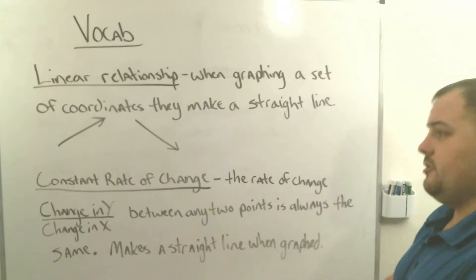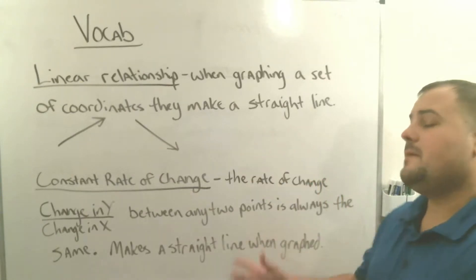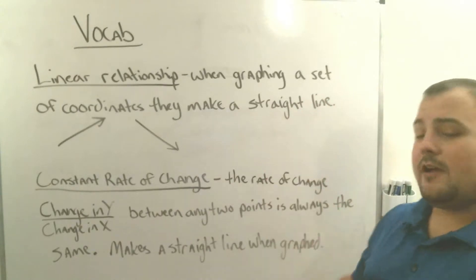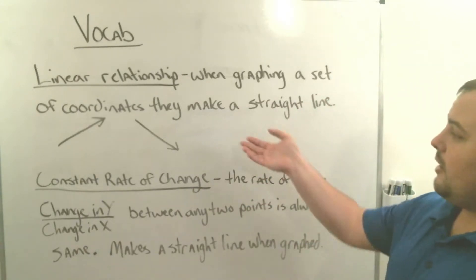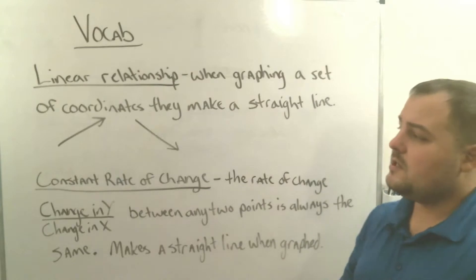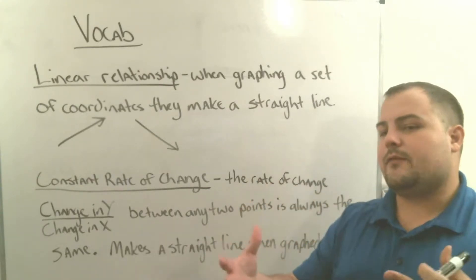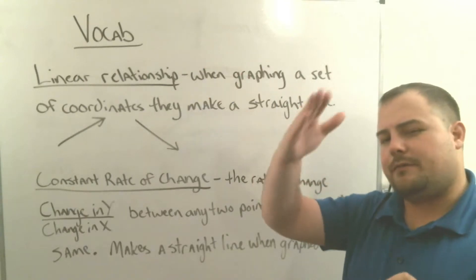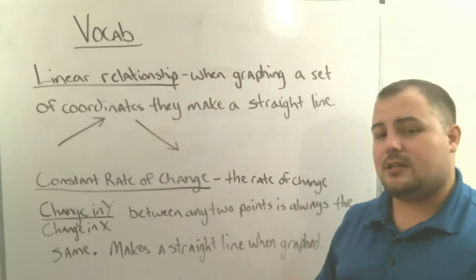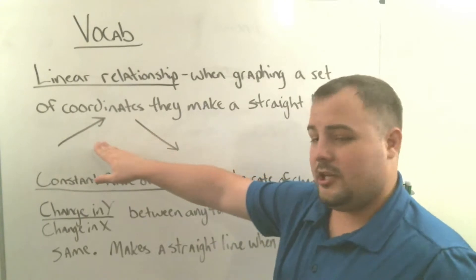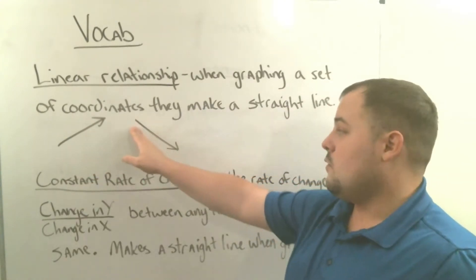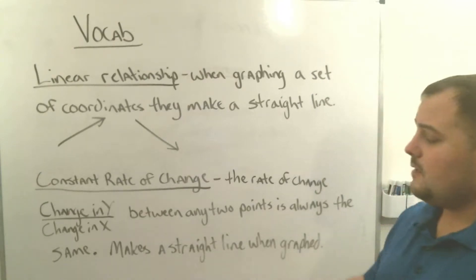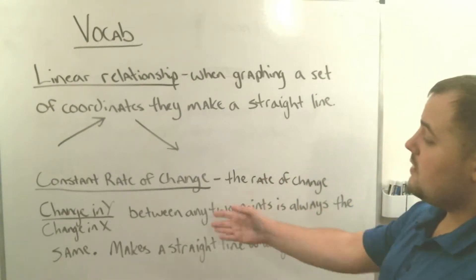For vocab today we have two words: linear relationship and constant rate of change. A linear relationship is when we graph a pair of coordinates and we actually make a straight line when we connect the dots. So if we take information given on a table, plot all the points, and they fall on a straight line, that's a linear relationship — something that makes a straight line going up (positive) or going down (negative).